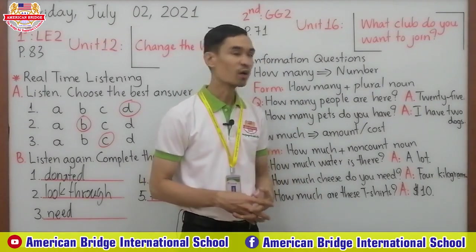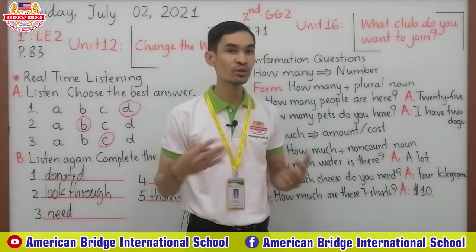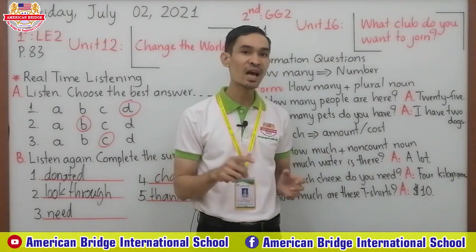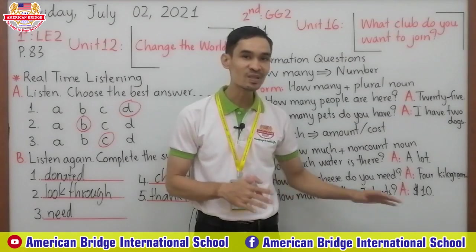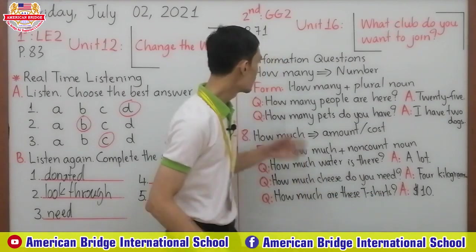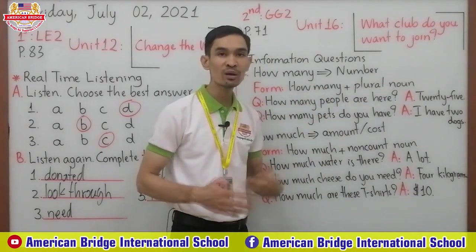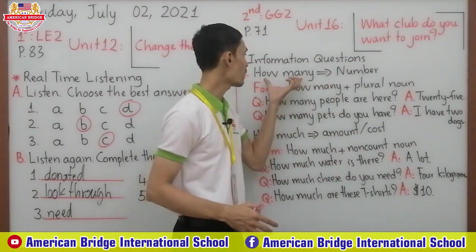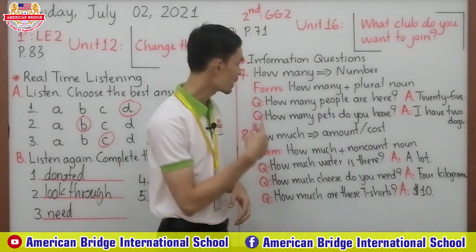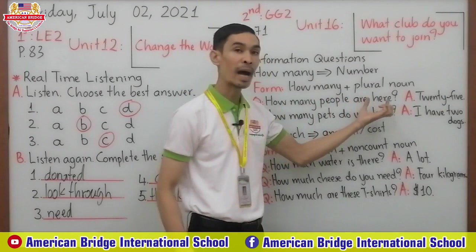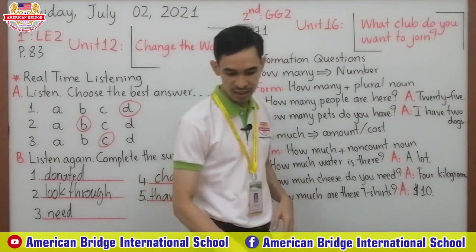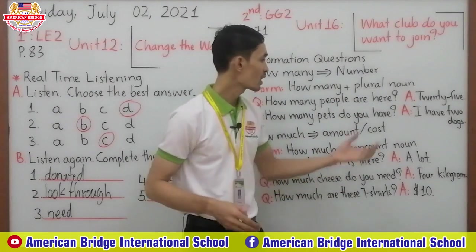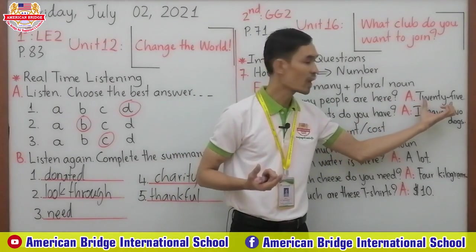Look at the form: how many + plural noun. In our book they say 'count noun,' but I make it easier — I say plural noun. Plural noun means the noun that you add -s, -es, or -ies. You've learned this since level one. So you use 'how many' plus a plural noun to make the question, and the answer must be a number. Look at the example: 'How many people are here?' — the answer is 25.